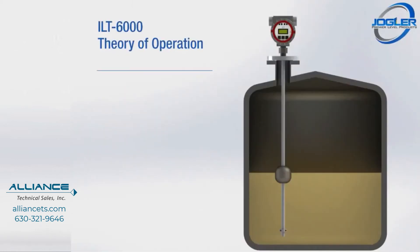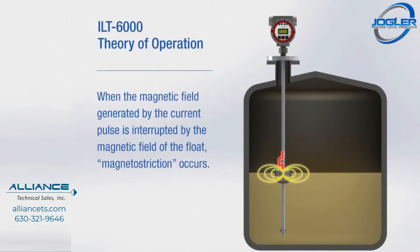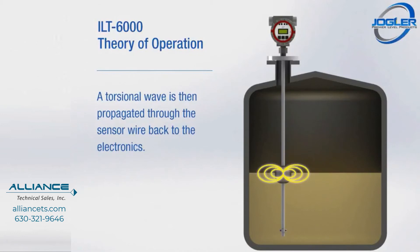The ILT-6000's electronics send a current pulse through the magnetostrictive sensor wire. When the magnetic field generated by the current pulse is interrupted by the magnetic field of the float, magnetostriction occurs. A torsional wave is then propagated through the sensor wire back to the electronics.